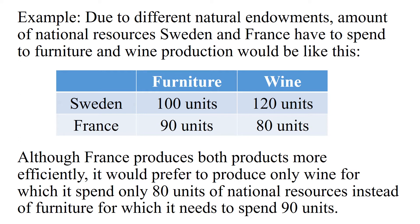For a company in Sweden to manufacture one unit of furniture, a Swedish company would have to spend 100 units of production inputs. A company in France would spend around 90 units to manufacture the same unit of furniture. On the other side, for wine production, a Swedish company might have to spend on average 120 units to manufacture a unit of wine, whereas a French company could probably do it for 80 units, because of their natural differences.